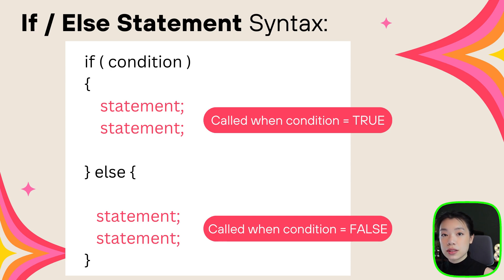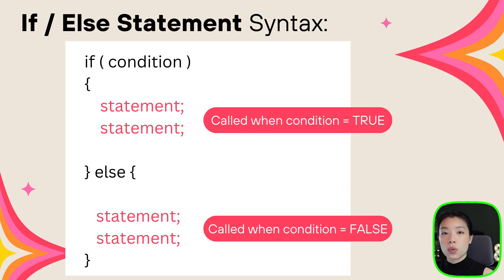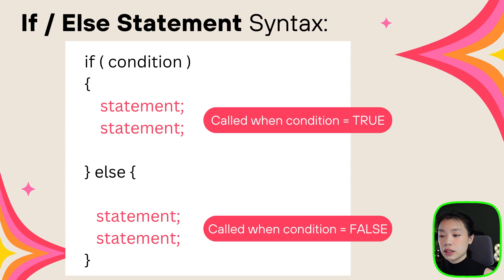And then you have else, and you have another set of curly brackets. And underneath that, those are the commands that you want to be called when the condition is false. So as you can see here, it's either the commands within the first part or the second part that will be called, because the condition will be either true or false and nothing else.